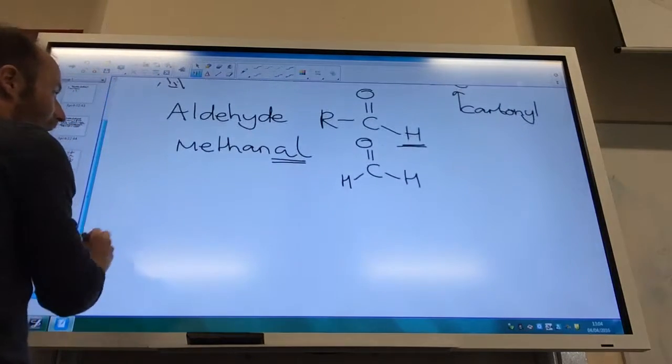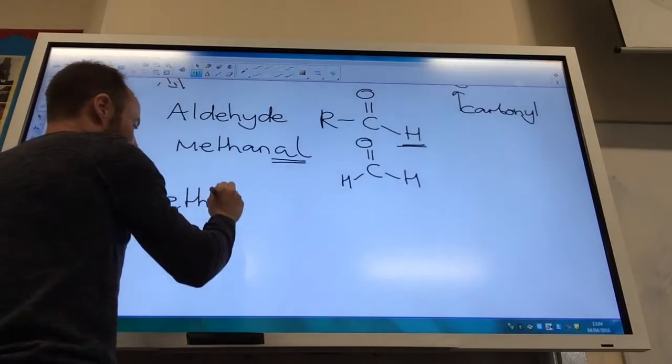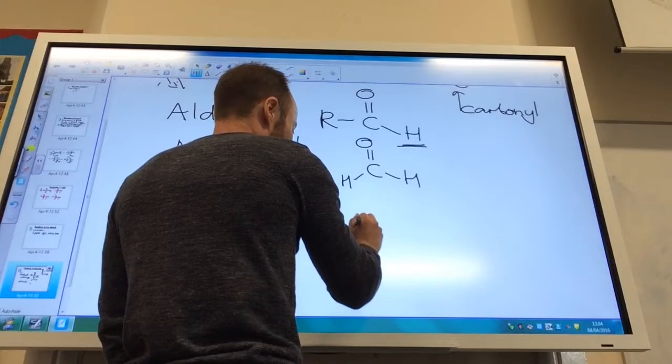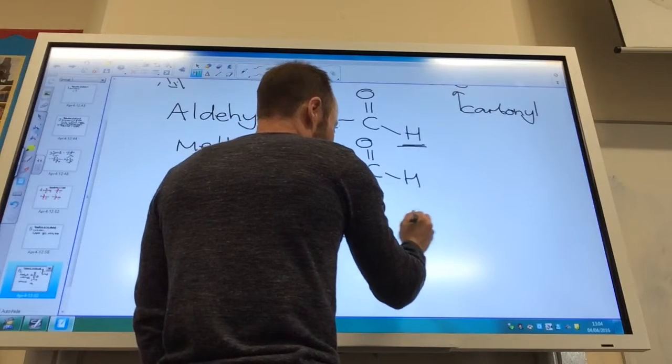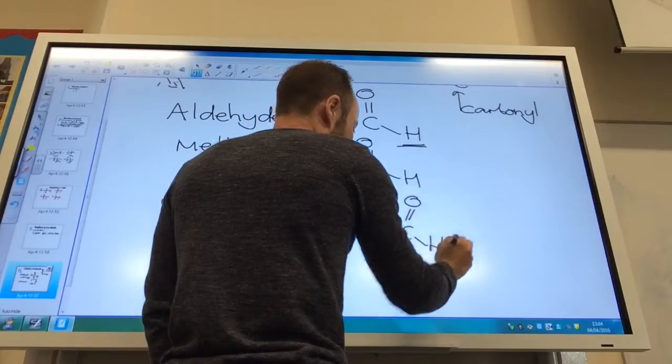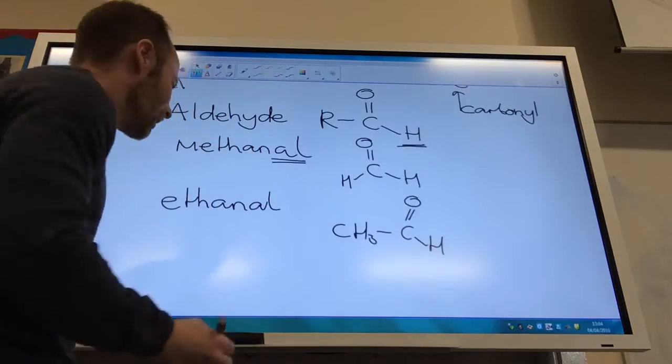The second one is going to be ethanal. So I've got two carbons now - it's going to be CH3, then C double bond O, and then an H on the end. You can see how it works.